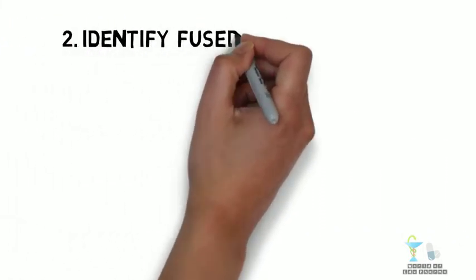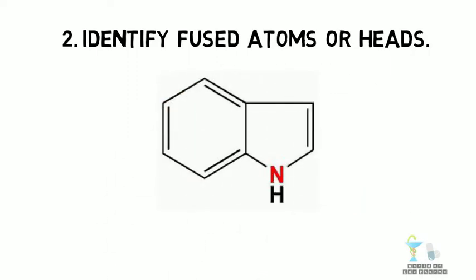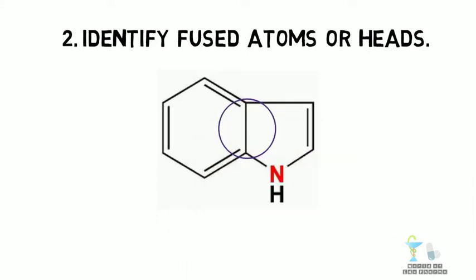We have to identify fused atoms or heads. Now just look at this compound. Find the fused atoms - one and two. There are two atoms fused to one another in this compound. Next is third rule.